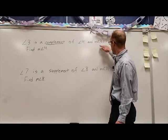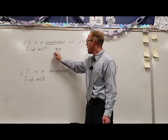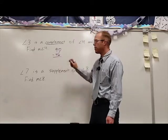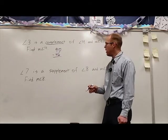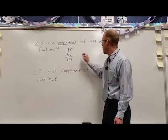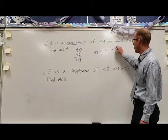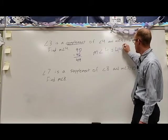Well if they add up to 90 degrees and this angle is measured 46, we can simply do 90 minus 46 to figure out what the measure of the other angle would be. 90 minus 46 would be 44. So the measure of angle 4 is equal to 44 degrees.